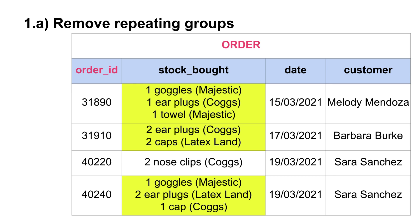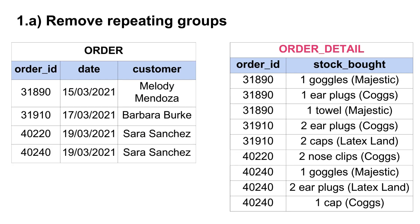We can observe that there are repeating groups in the order table, specifically in the stock board column — the second column, highlighted in yellow. We need to remove those and move them to a separate table. So we split the order table into two tables by creating a new table called 'order detail', and we include the order ID attribute in that table too, since we need to link it back to the parent order table.